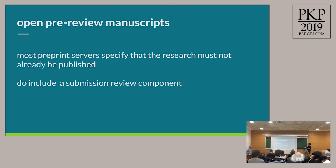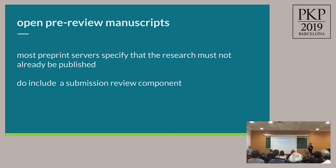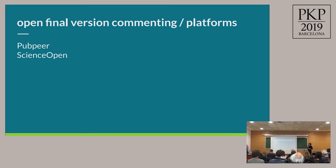Most preprint servers already include a submission review component, so within that workflow an author could provide documentation or evidence supporting their claim that the submission was not properly peer reviewed. If contending there was no peer review, simply submitting both the preprint and final published version could be sufficient proof. If contending the peer review was insufficient, you could submit the peer review report — something like 'article well written' is clearly not substantial peer review. I'd urge those building preprint servers right now to consider this as part of their workflow.